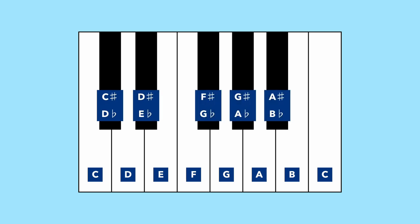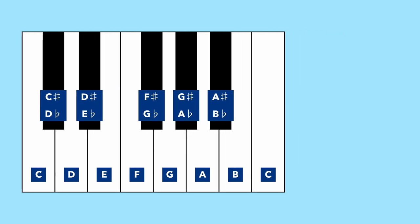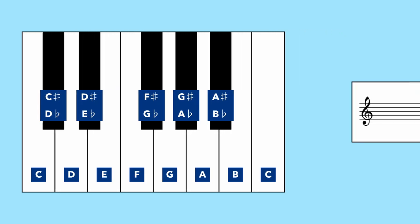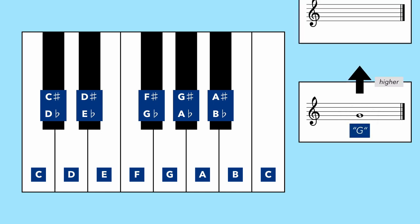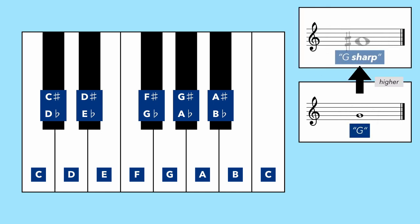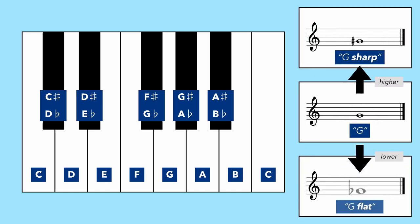Accidental notes — the black keys — take the suffix sharp or flat. For example, the natural note G can become G sharp or G flat, adding an accidental. A pretty smart system.